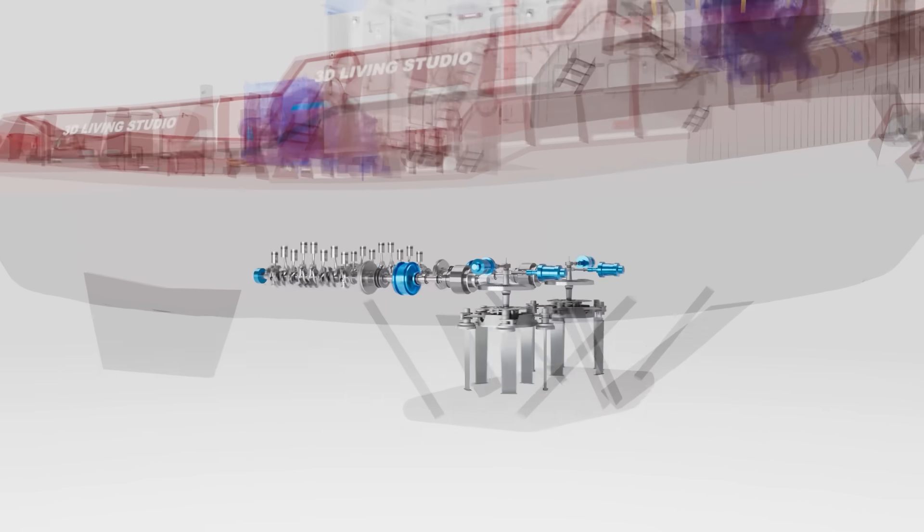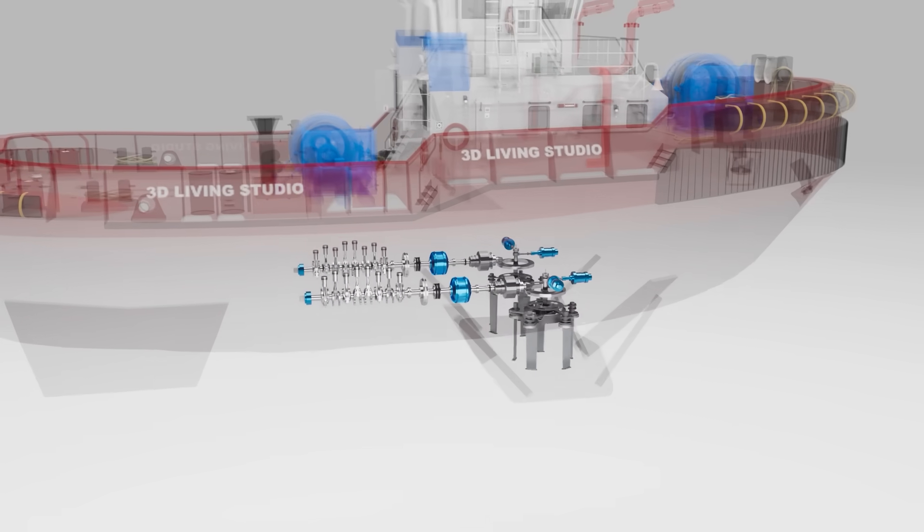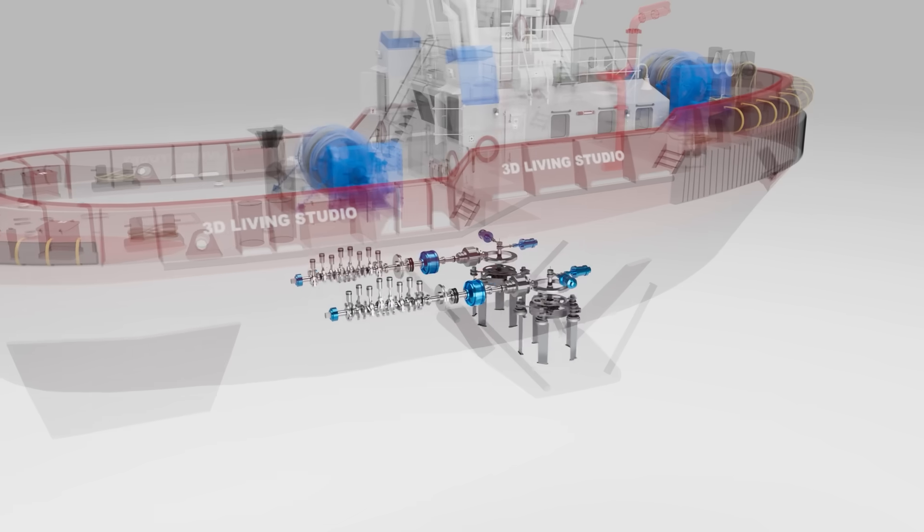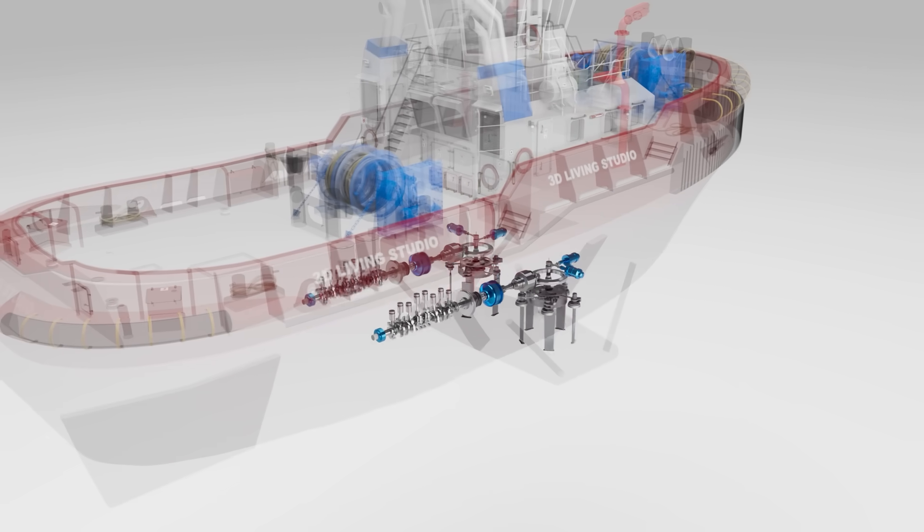A Voith Schneider propeller or VSP, unlike conventional propellers, is a vertically mounted and rotating disc with blades that can be adjusted to change the direction of thrust.